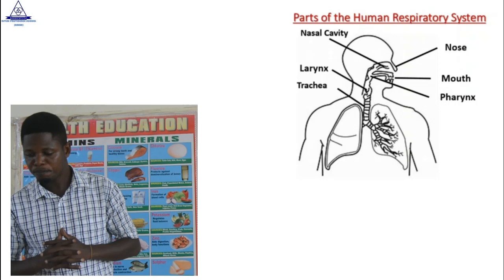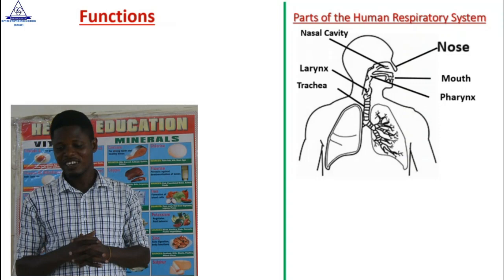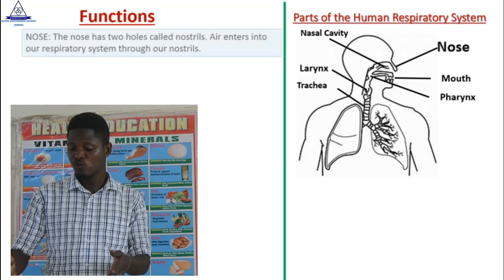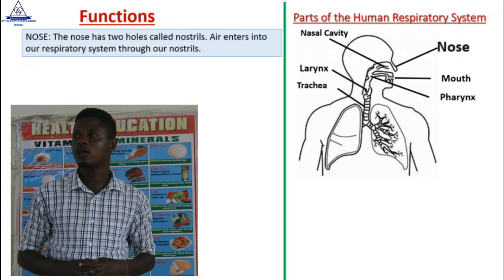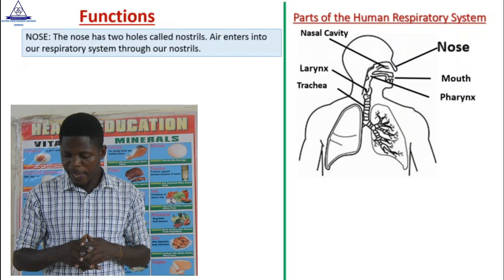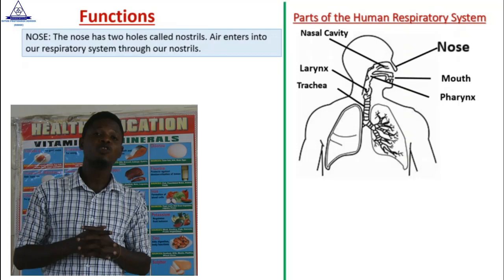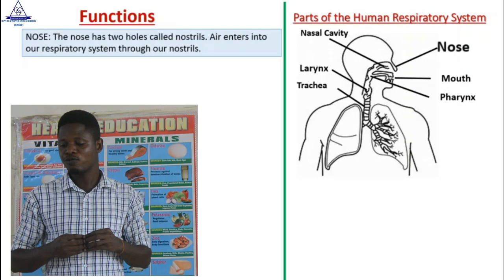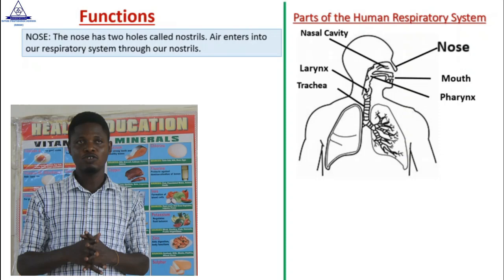The first part of the respiratory system I would like to talk about is the nose. What is its function? The nose has two holes called nostrils. Air enters into our respiratory system through our nostrils. Now you know the role the nose plays when it comes to respiration — the air enters through the nose into the system.